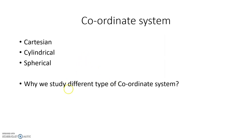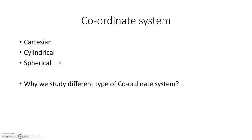The very important topic is the coordinate system. There are three types: Cartesian, Cylindrical, and Spherical. The question arises: why do we study three types of coordinate systems? Because to simplify the numericals — if any equation is complicated in the Cartesian coordinate system, it may be simpler in the Cylindrical or Spherical coordinate system. That's why we study different types, and according to the application, we use the appropriate coordinate system.